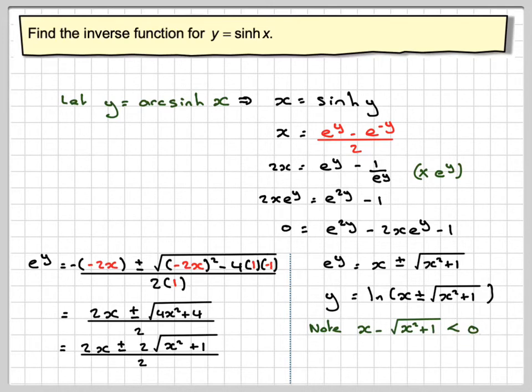And you can't take ln of a negative number or 0, therefore there's only one solution: ln of x plus square root of x squared plus 1. So what we are saying is arcsinh of x is ln of x plus the square root of x squared plus 1.